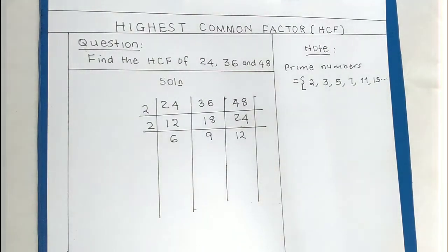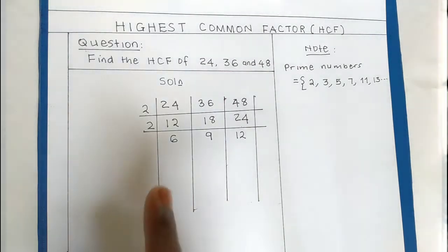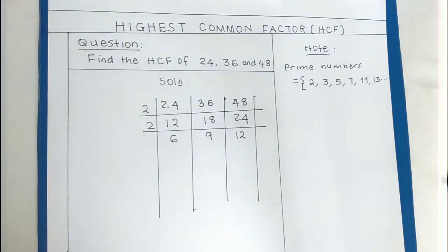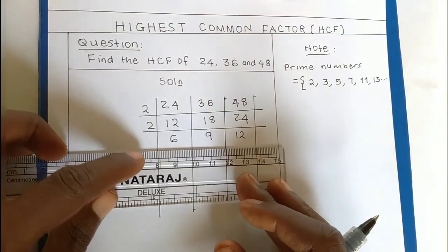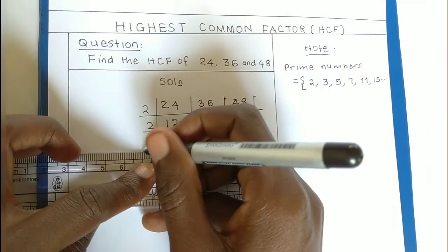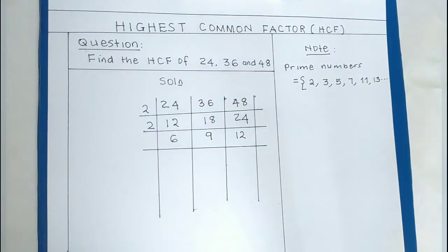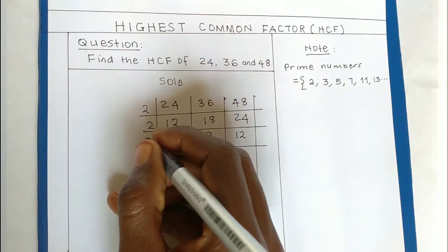you will see these numbers are not divisible by 2. Let's look for a prime number that can divide them. When we look at 3, you see that 6 is divisible by 3, 9 is divisible by 3, and 12 is divisible by 3. So let's divide by 3.